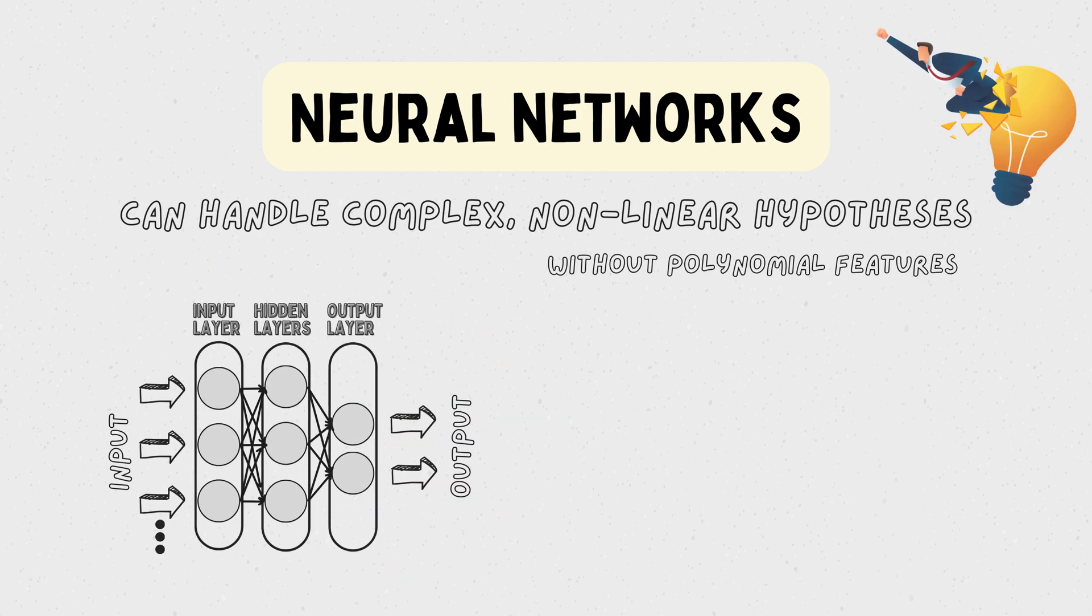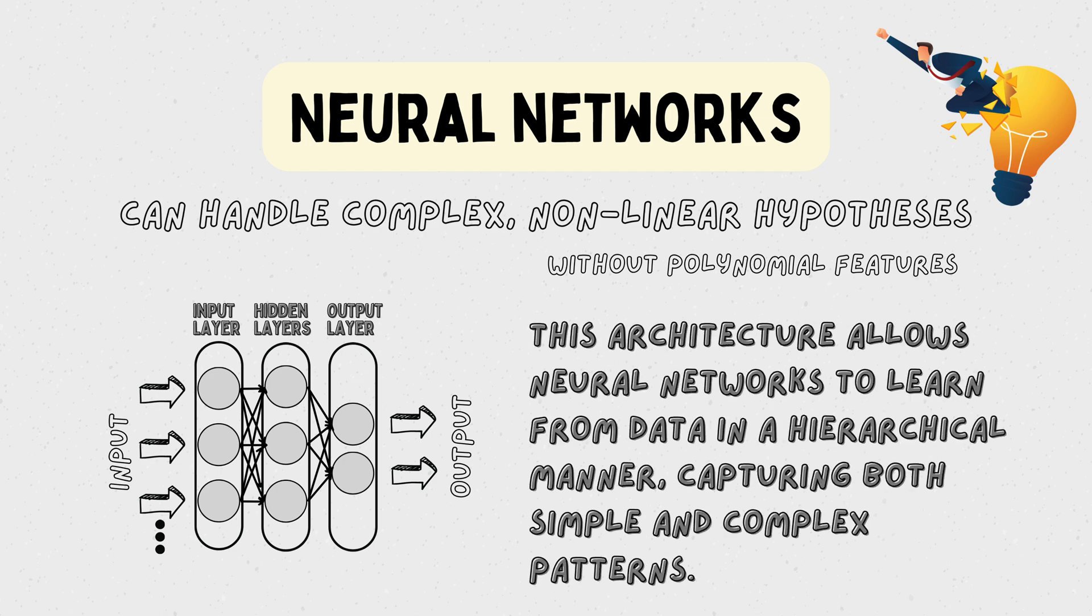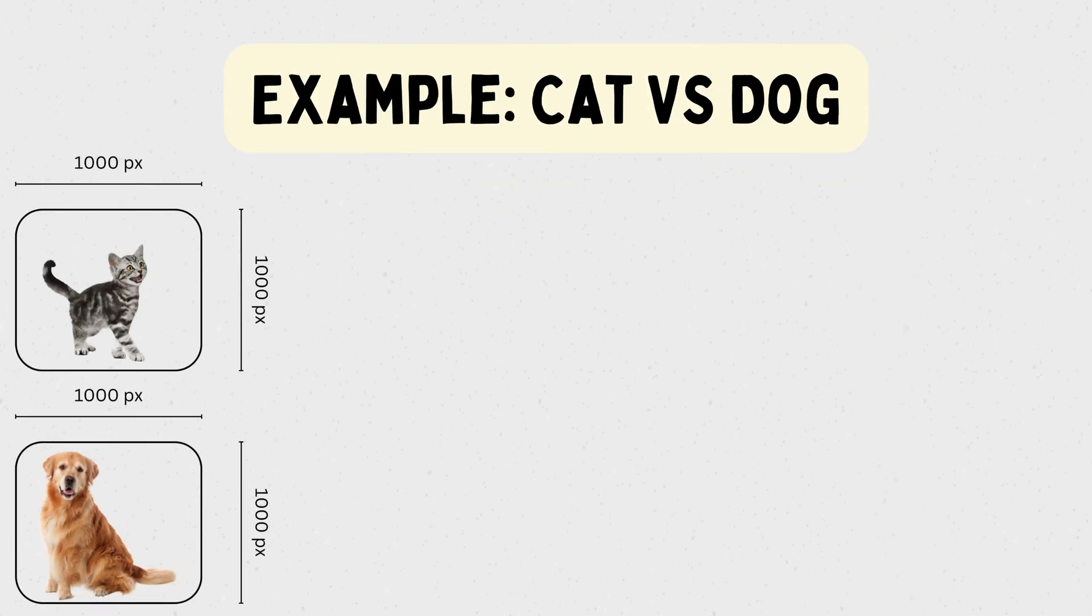This architecture allows neural networks to learn from data in a hierarchical manner, capturing both simple and complex patterns. Let's take our image recognition example further. Imagine you're trying to identify cats and dogs in pictures.